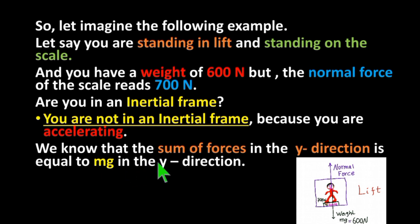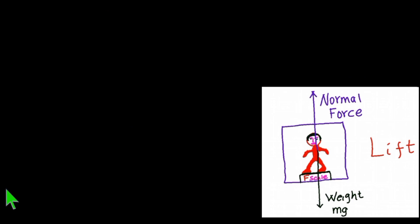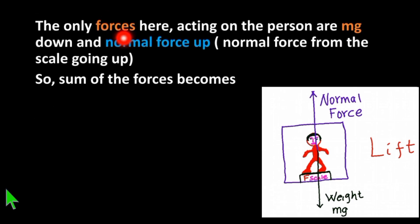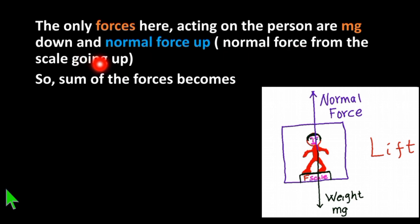We know that the sum of forces in the y direction is equal to mass times acceleration in the y direction. The only forces acting on the person are mass times gravity downward and the normal force from the scale going up.